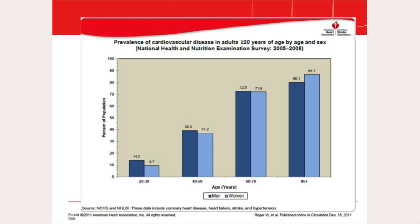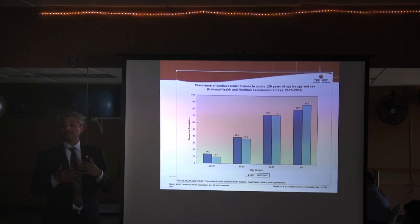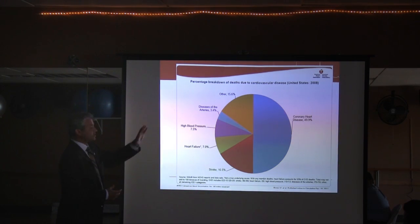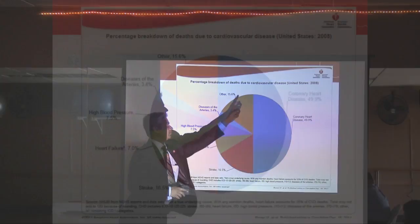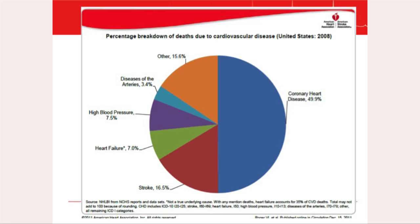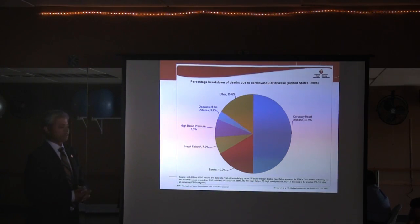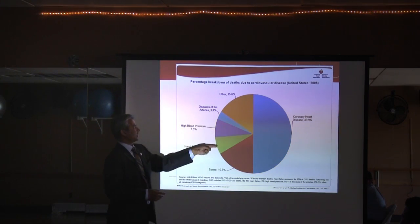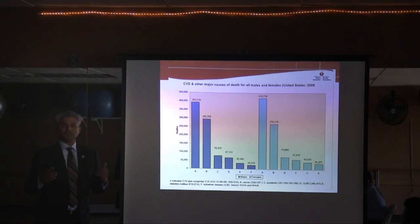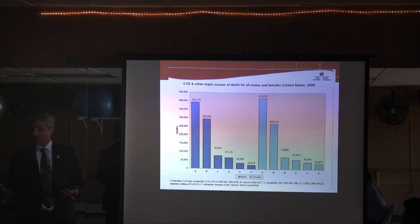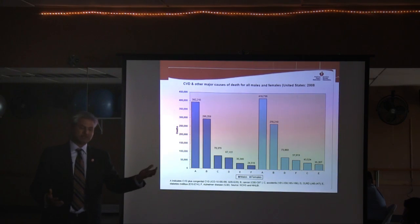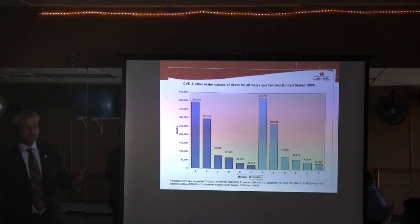Does cardiovascular disease cause significant problems? Looking at deaths caused by CVD, approximately half are due to blockages in the arteries of the heart — coronary artery disease. The other forms include stroke, heart failure, and hypertension. Does heart disease actually kill people? Is it a significant cause of death we need to be concerned about, or something rare like the bird flu?